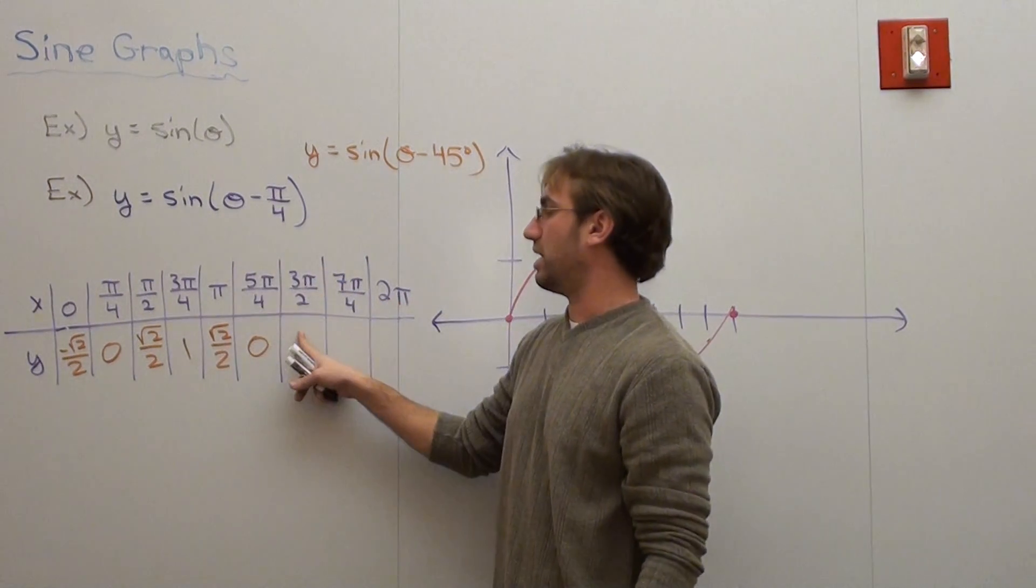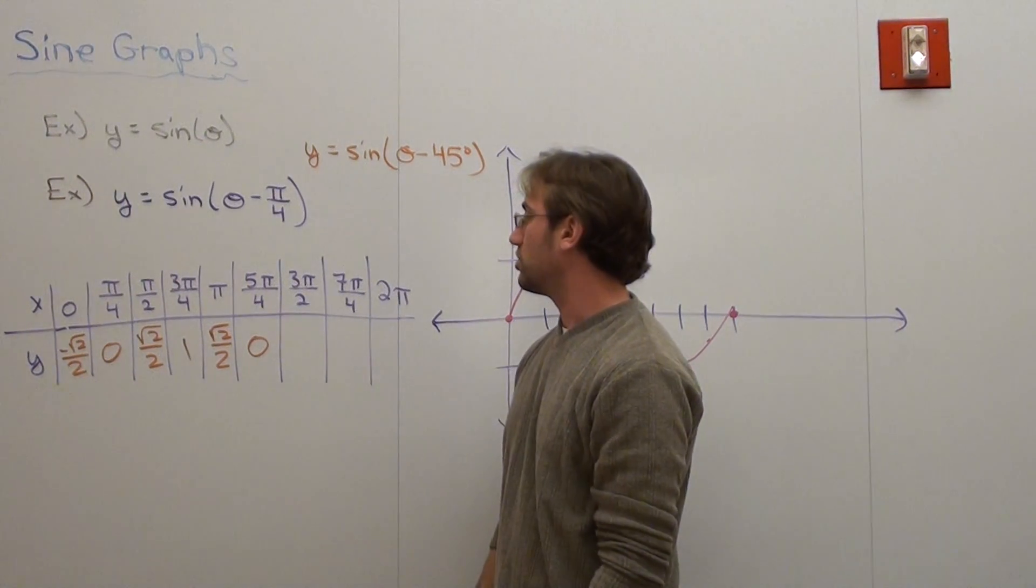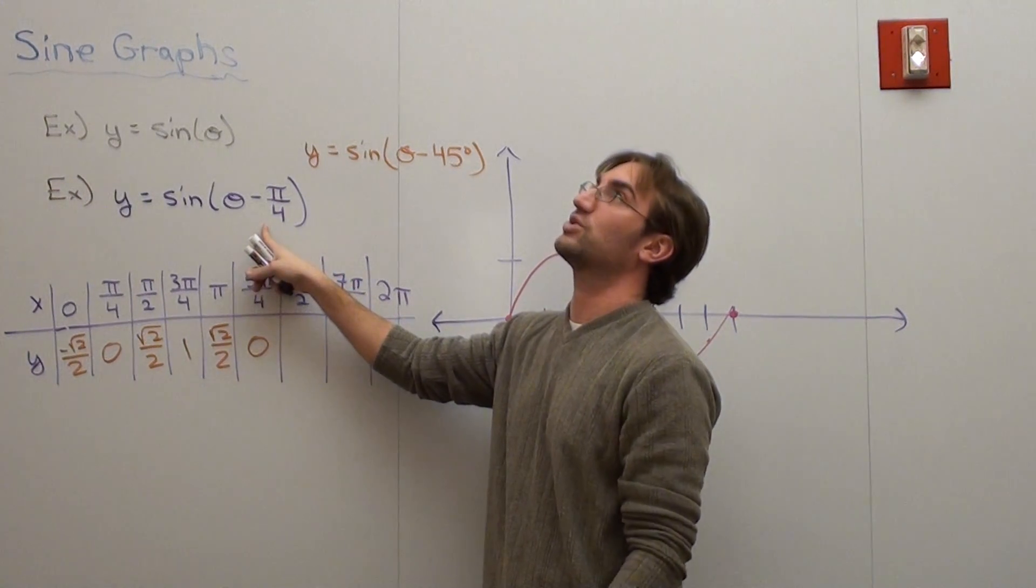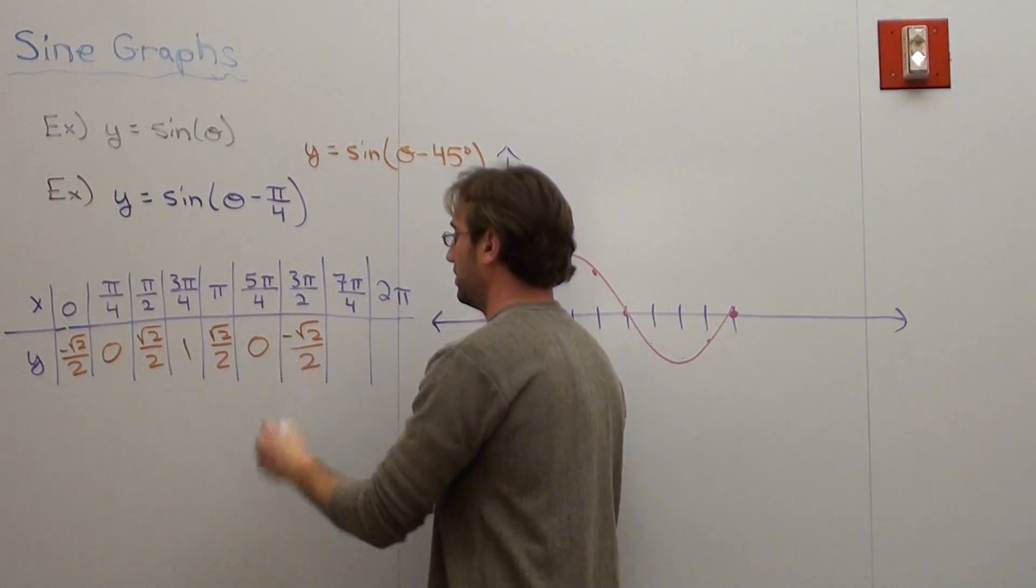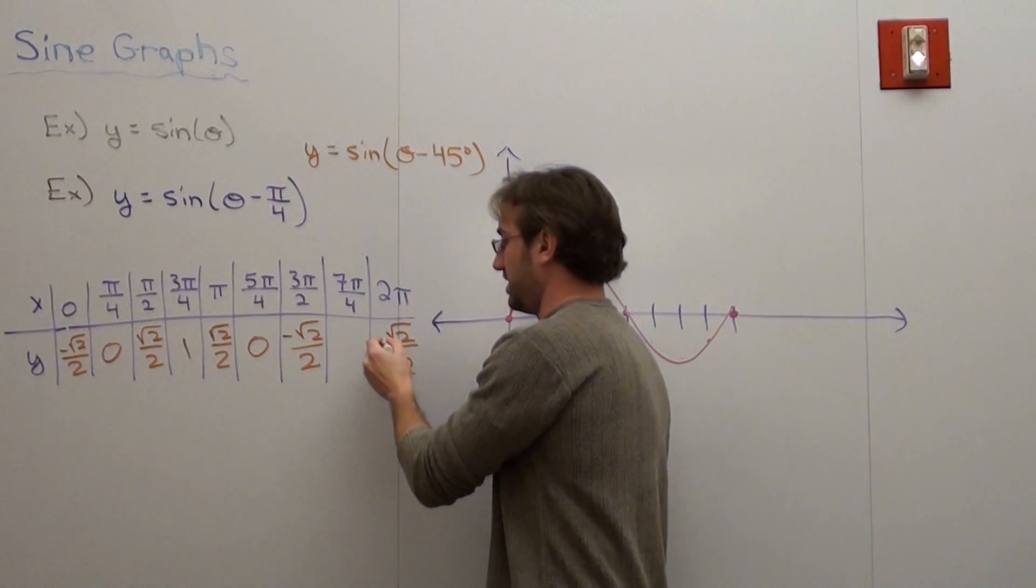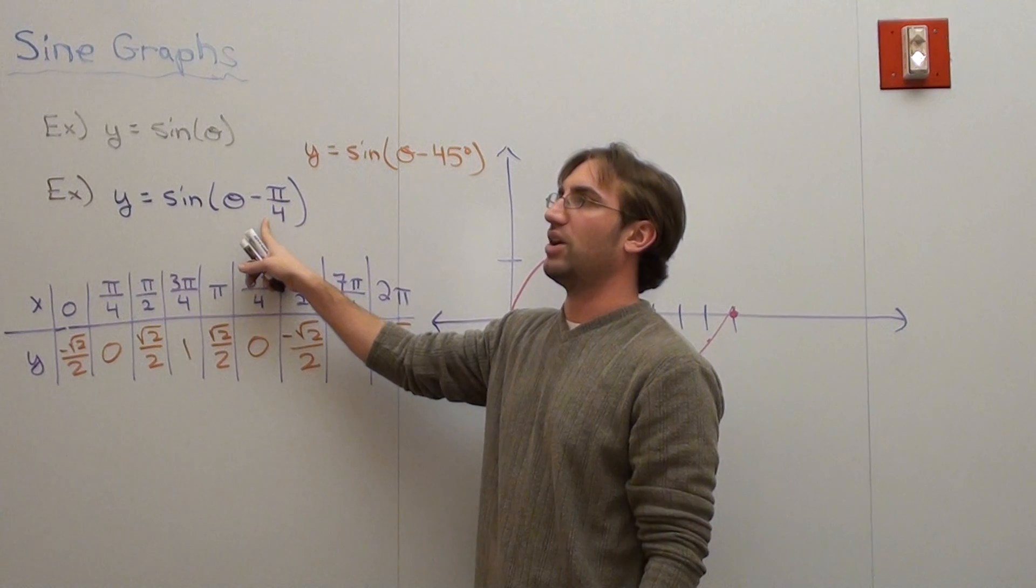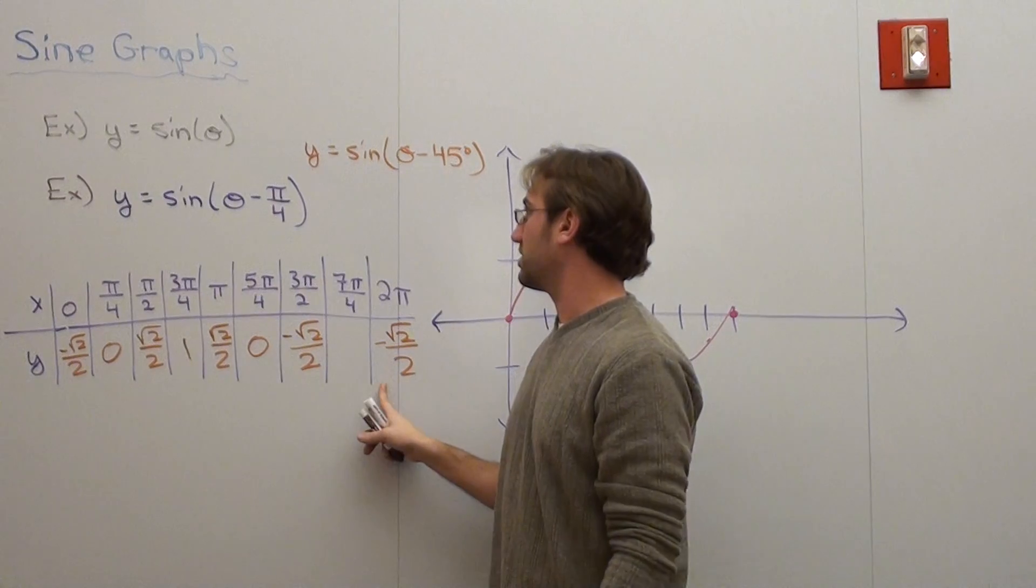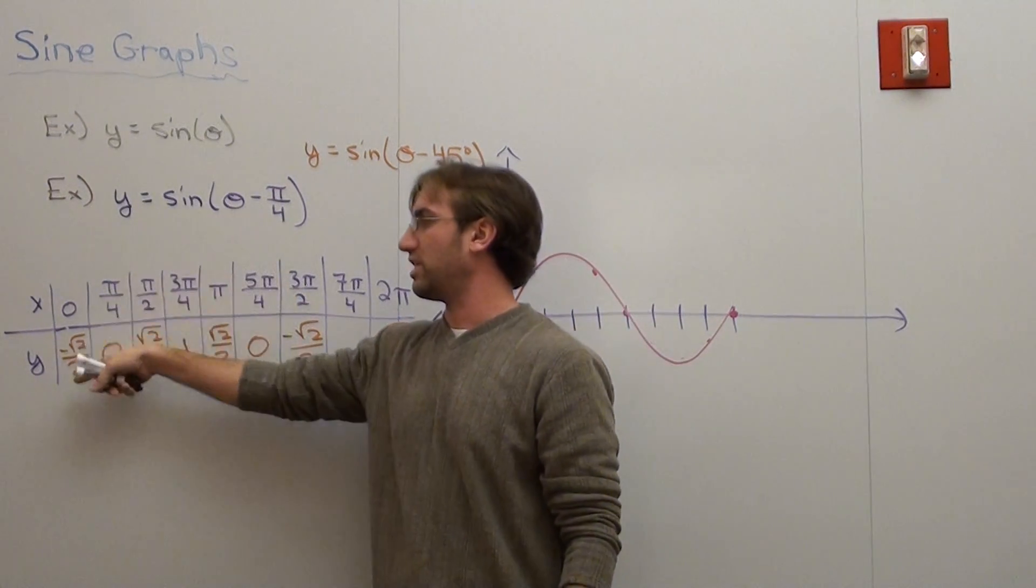Next one. 3 pi over 2 is 270. Sine of 270 minus 45 is 225. Sine of 225 is negative root 2 over 2. Yeah, I'm just lazy. This one's root 2 over 2 as well, but it's negative root 2 over 2. I'll go ahead and show it. Sine of 360 minus pi over 4 is sine of 315. Sine of 315 is negative root 2 over 2. I did this one, negative 45, which is the same thing.